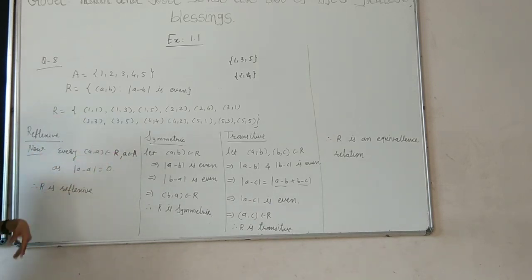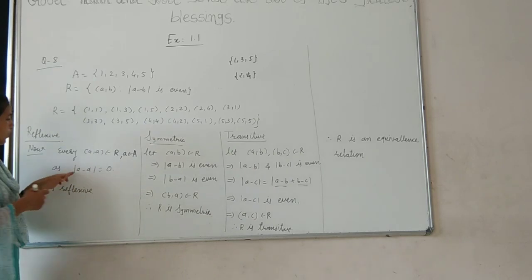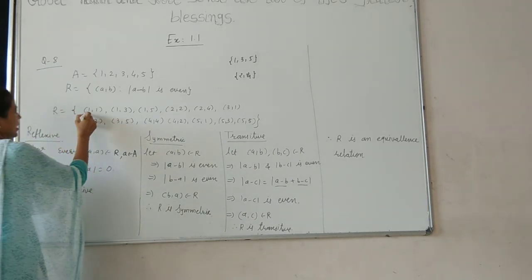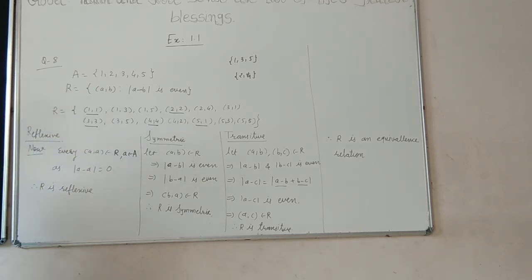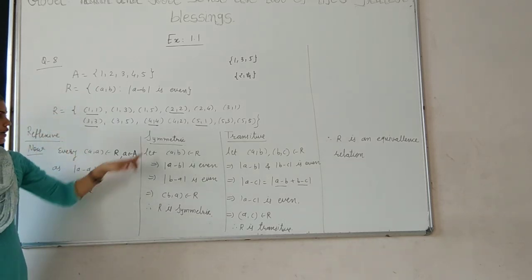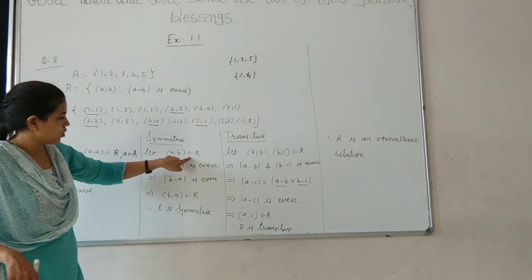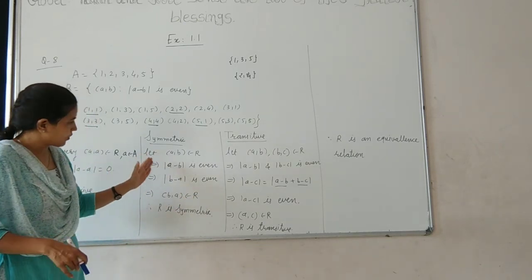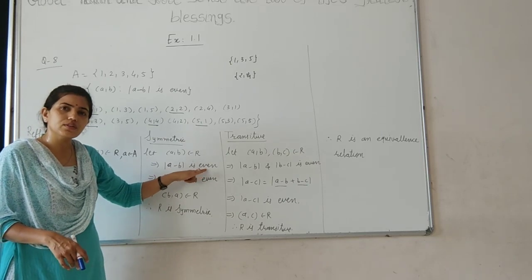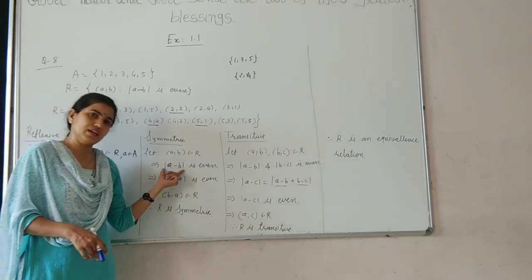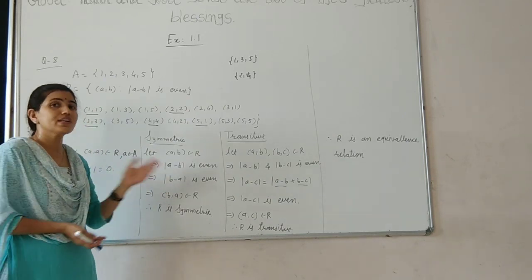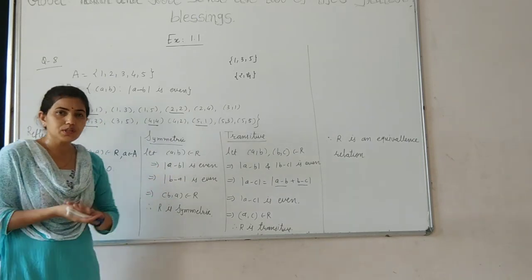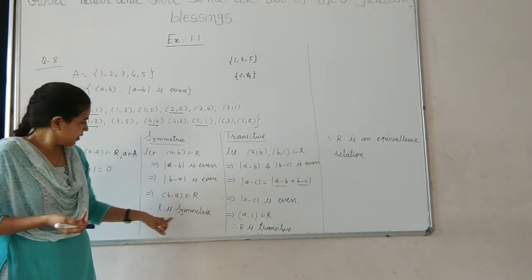Now for reflexive: every (a, a) belongs to R as a - a = 0, and 0 is even. Therefore R is reflexive. For symmetric: if (a, b) belongs to R, then |a - b| is even. Since |b - a| = |a - b|, it is also even. Therefore (b, a) belongs to R. Therefore R is symmetric. You can check: (1,5) and (5,1), (2,4) and (4,2), (3,5) and (5,3) — all elements (a,b) and (b,a) are present in R.